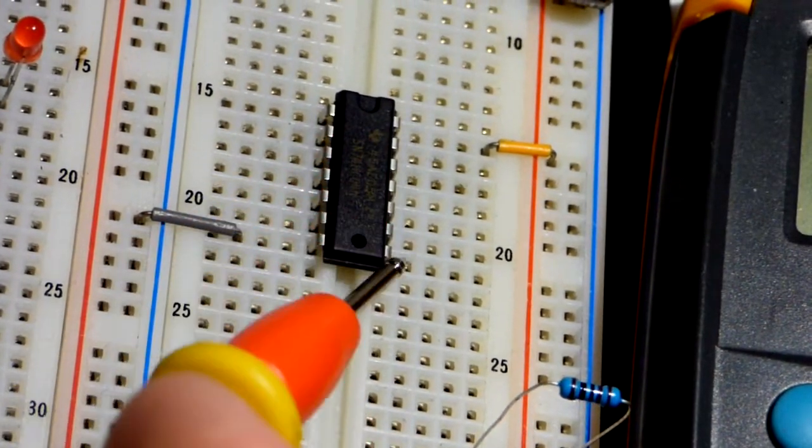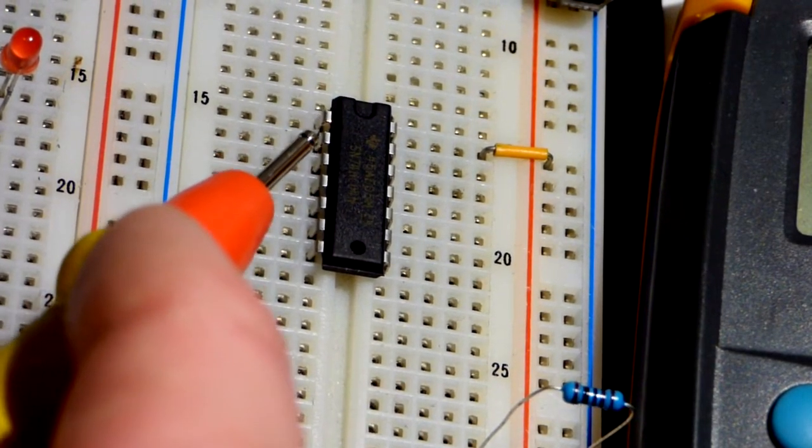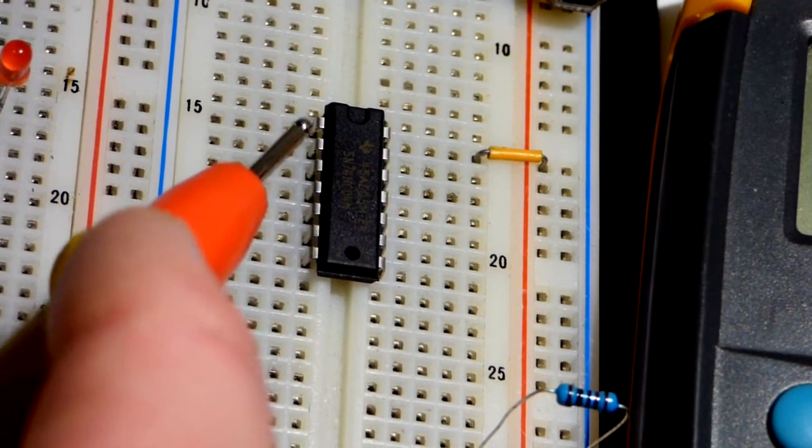There's 14 pins total. Seven on that side, seven on that side. It's pretty simple. We have the input and then the output for one inverter circuit, a NOT gate.